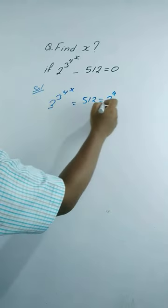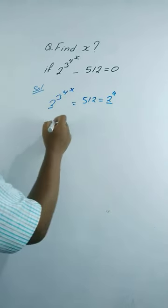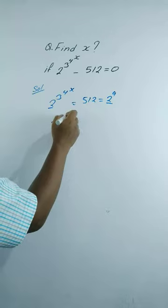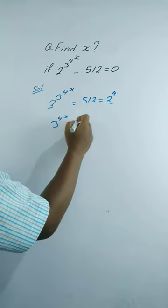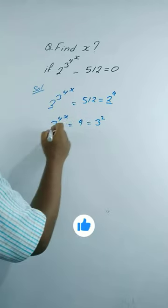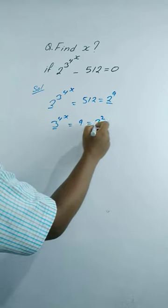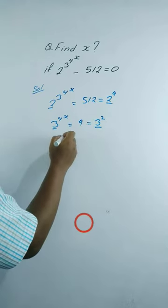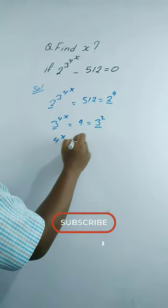Now since the bases are equal, therefore 3 to the power 4 to the power x equals to 9. We can write 9 as 3 squared. Again, since the bases are equal, therefore 4 to the power x equals to 2.